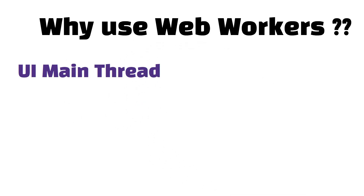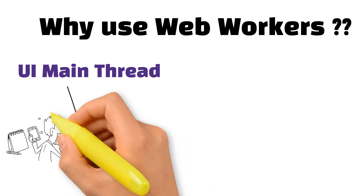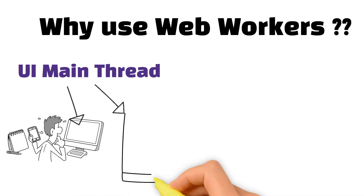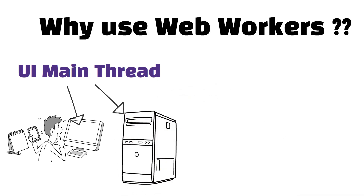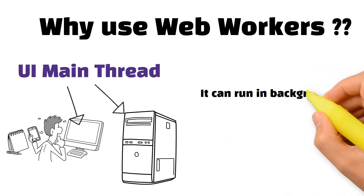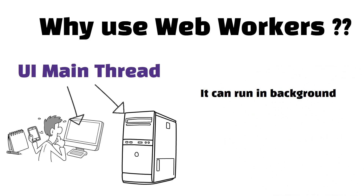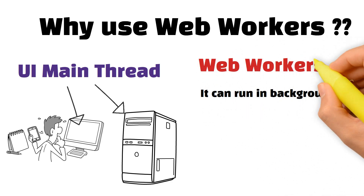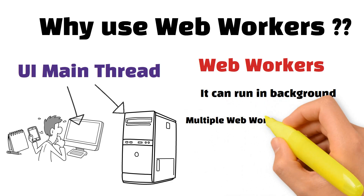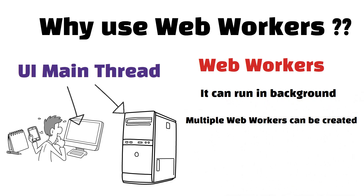So why do we need to use web workers? There are two threads: the first is the main thread, which controls the user interface — all the buttons and input fields you see on screen — and it consumes a lot of CPU. That's why we need a mechanism to offload work from the main thread, and that's where web workers come in.